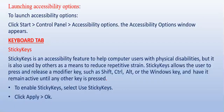Now the next topic is how to launch Accessibility Options. To launch it, click Start, then Control Panel, then click the Accessibility Options option. The Accessibility Options window will appear and it will display 5 tabs.